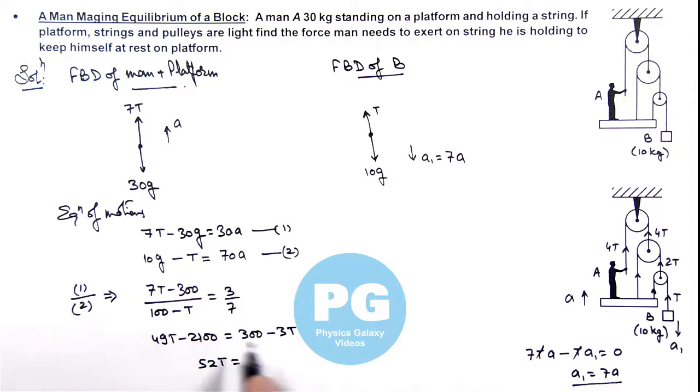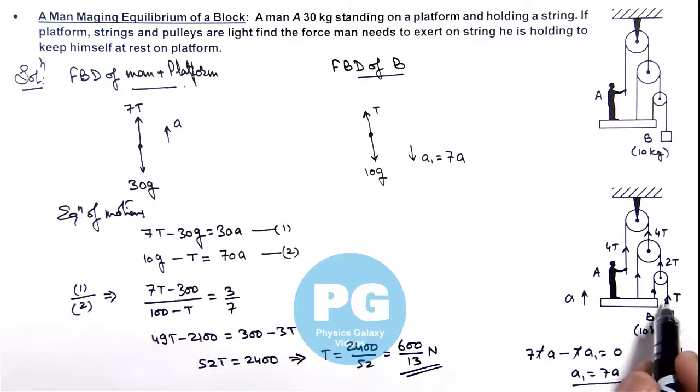As equal to this is 2400, this implies on simplifying the value of tension we are getting is 2400 by 52, or we can write it 600 by 13 newtons. That will be the tension in this string.